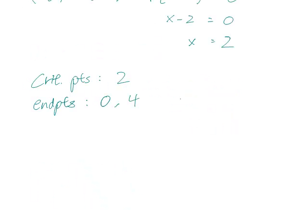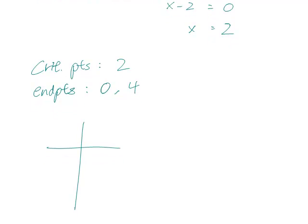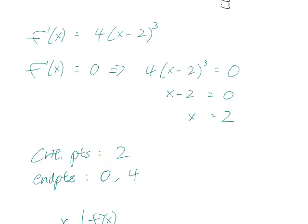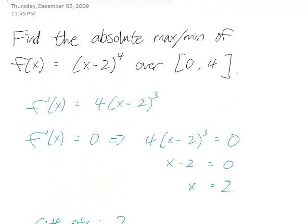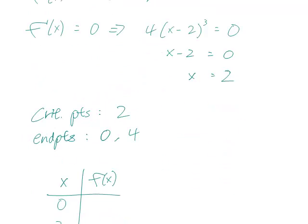We have to calculate - let's make a little chart - we calculate f(x) for these three values and compare them. When x is 0, this is (-2)^4, so that would be 16.